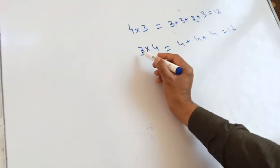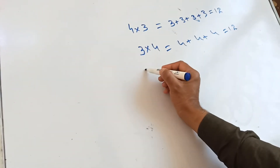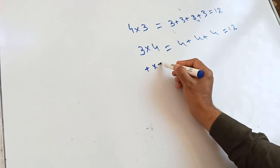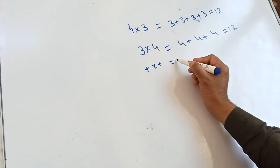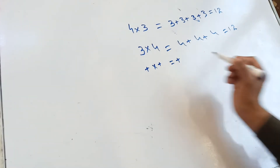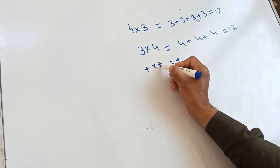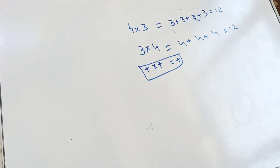Here, 3 is positive and 4 is also positive, so the answer will be positive. That is, plus times plus is equal to plus. So one proof is done.